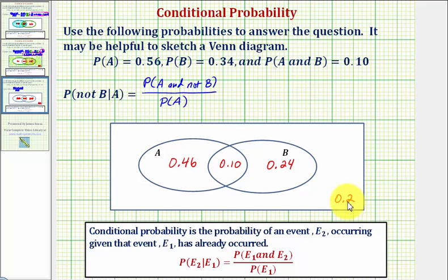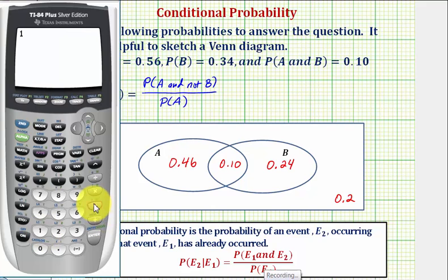Again, this is the probability of being not in A and not in B. Of course, we can check this on the calculator. One minus the quantity 0.46 plus 0.1 plus 0.24.